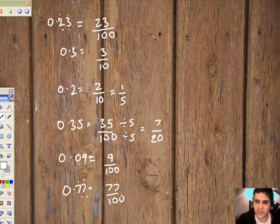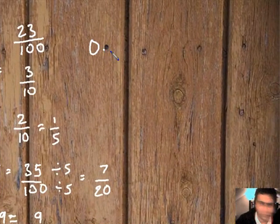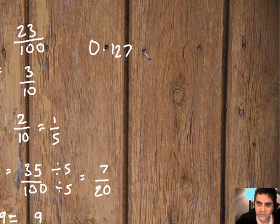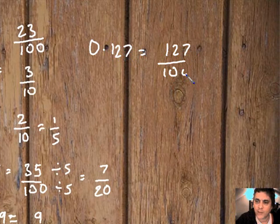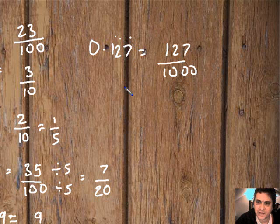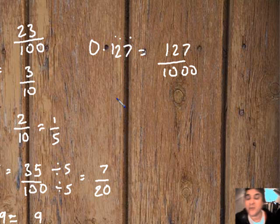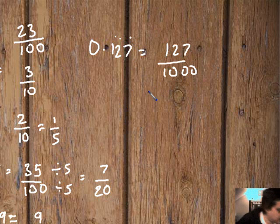And the last one, I'll do it up here, 0.127. We've got three figures. So we're going to go 127 over 1,000, because we go tenths, hundredths, thousandths. A lot easier to write than to say. I don't think that can be simplified. If you can find a way, then do let me know.